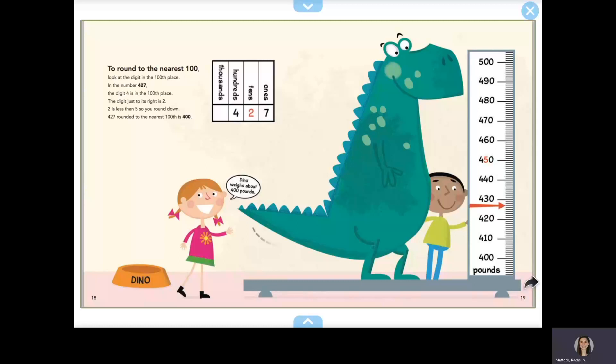To round to the nearest 100, look at the digit in the hundreds place. In the number 427, the digit 4 is in the hundreds place. The digit just to its right is 2. 2 is less than 5, so you round down. 427, rounded to the nearest hundred, is 400.